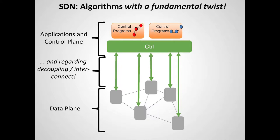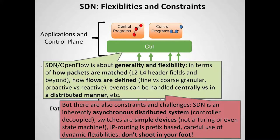In the SDN network the data plane is becoming simpler, so what are the algorithmic problems coming up in the data plane? There are also quite interesting algorithmic problems arising due to the decoupling of the data plane and the control plane — this is one of the fundamental principles of SDN. In general, SDN is really about flexibilities: you can match packets on layer two, layer three, or layer four headers, and do proactive or reactive flow installation, centrally or distributedly.